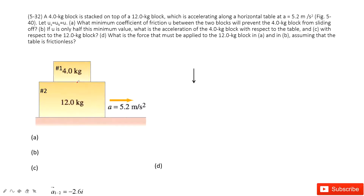It tells us the acceleration is 5.2 meters per second squared on the top. The first question asks you to find the minimum coefficient of friction mu. The second question says mu becomes half of this minimum value, and asks you to find the acceleration. The third question asks you to find the force in the previous two situations.